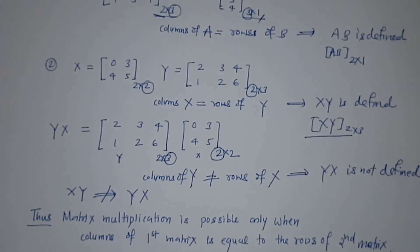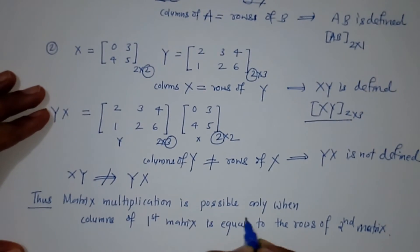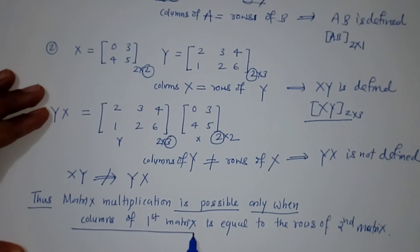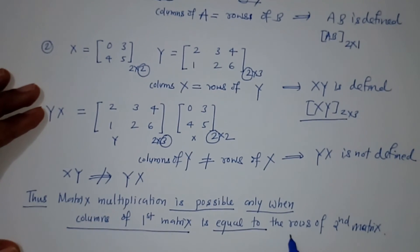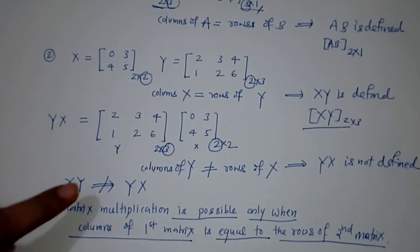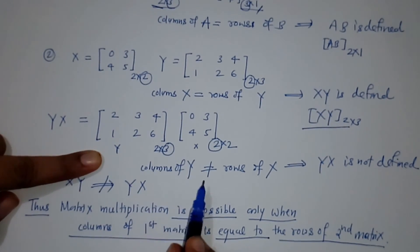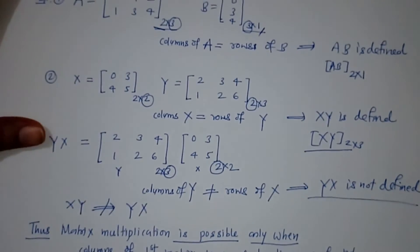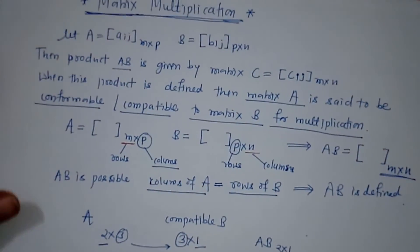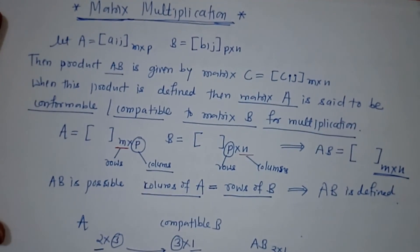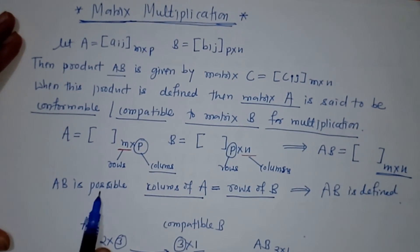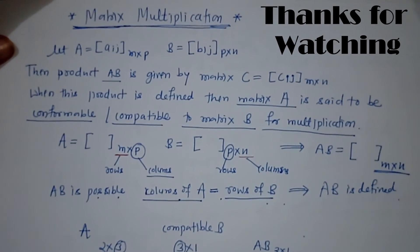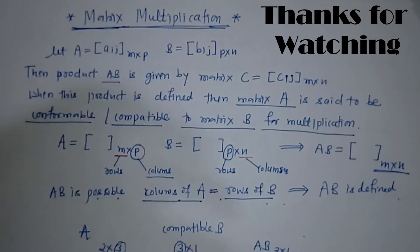So we have seen that matrix multiplication is possible only when the columns of the first matrix is equal to the rows of the second matrix. Here, columns of Y and rows of X are not equal, so YX is not defined. This is all about matrix multiplication — matrix multiplication AB is possible only when columns of A equals rows of B. Thank you.